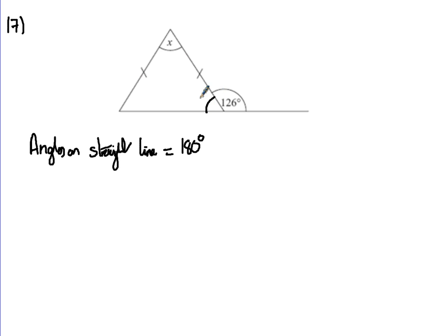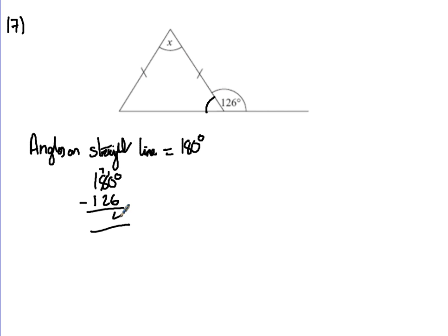So I want to work out this angle in here. If I do 180 degrees take away 126 — this take away this won't go, so we cross that 8 off and put it over 7 — 10 take away 6 is 4, 7 take away 2 is 5, 1 take away 1 is 0. So we've got 54 degrees in there.